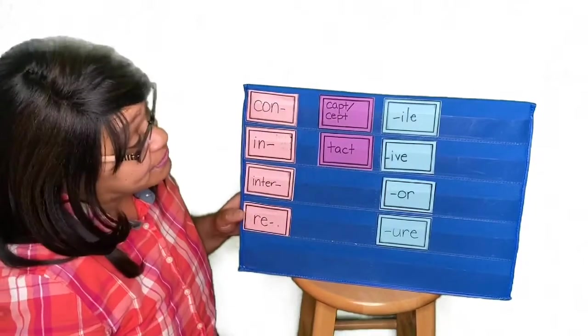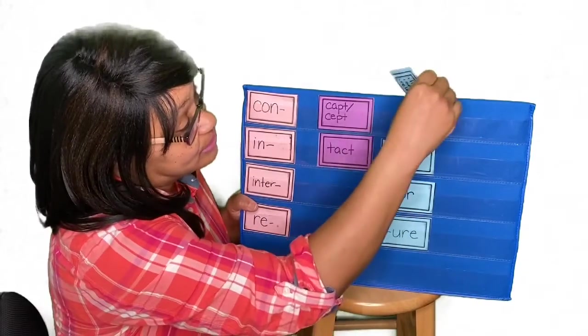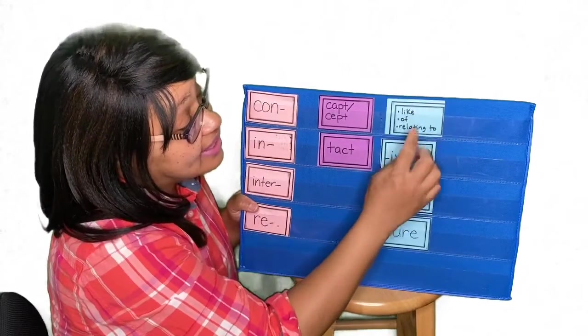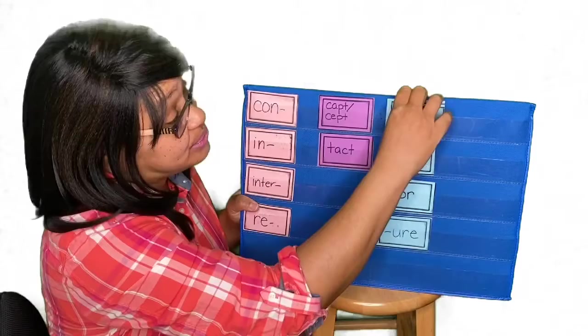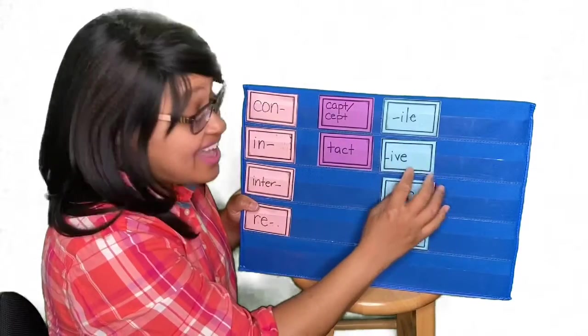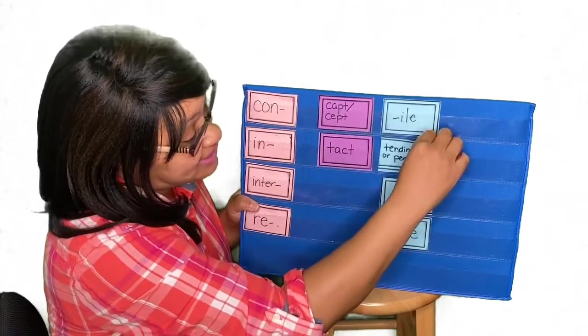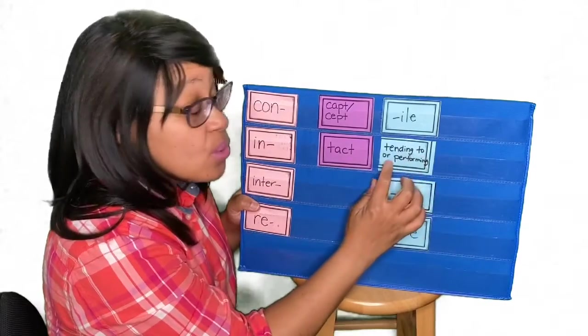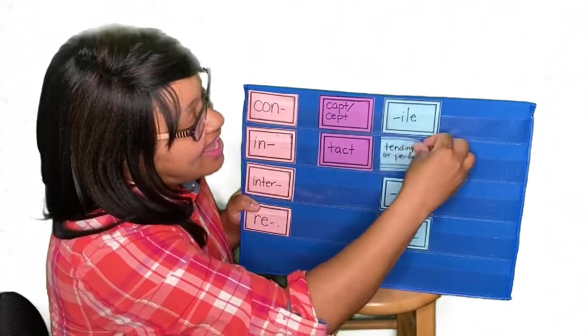Okay. And our suffixes for today. -al, which means like, of, or relating to. -al. -ive, which means tending to or performing. -ive.